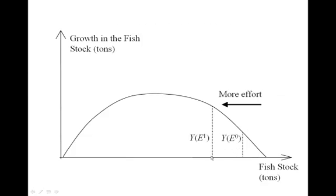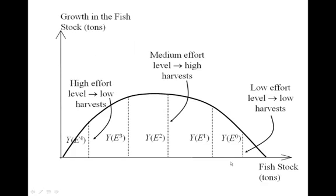If we increase the number of boats, the sustainable yield can actually grow. Adding another boat reduces the stock to a point where the natural growth rate has increased, so the two boats together are able to take out more fish than just the one boat sustainably. We can imagine this continuing — more and more boats, each time pushing the stock back, moving to a different point on the growth curve. But eventually we push the stock so low that harvests begin to decline, and we're harvesting less and less fish even though we've added more and more effort.